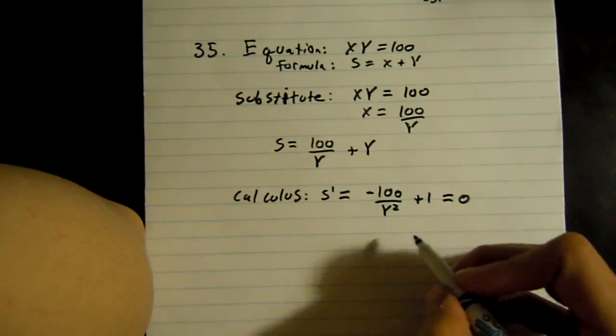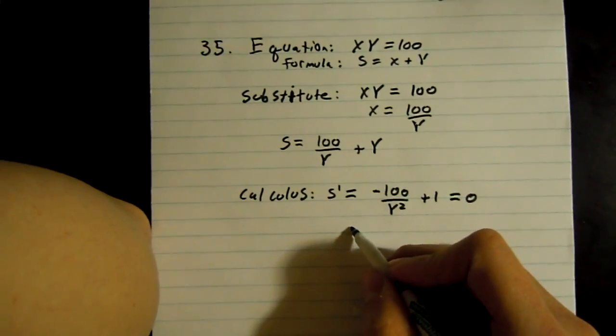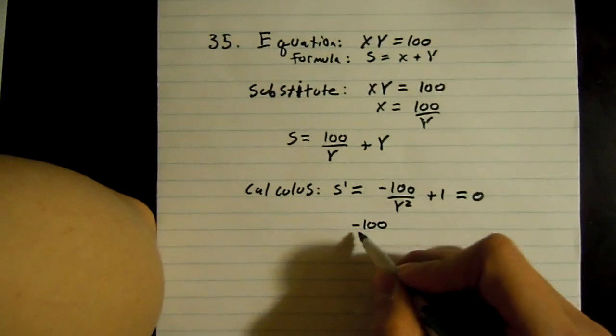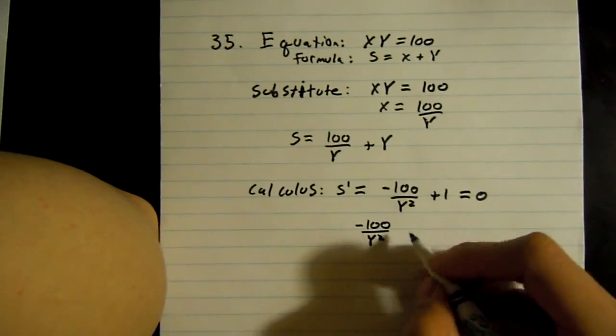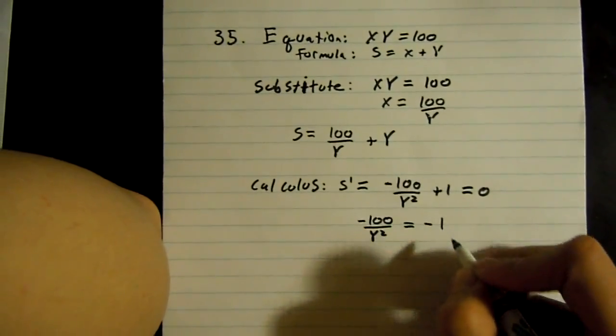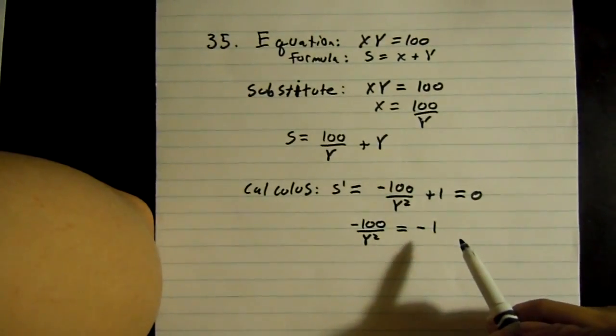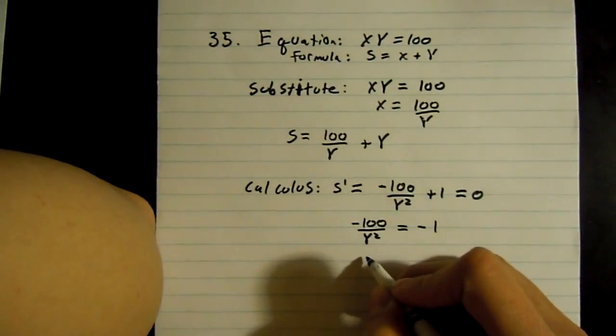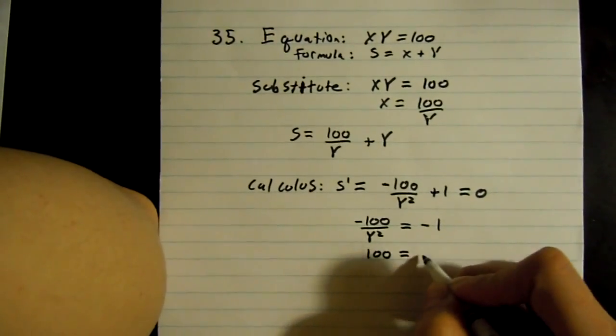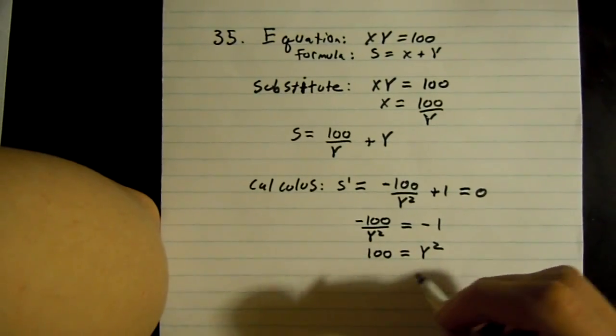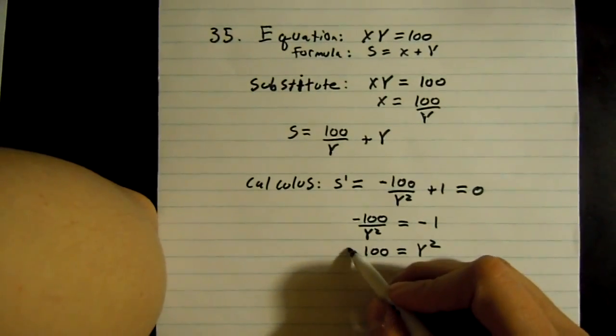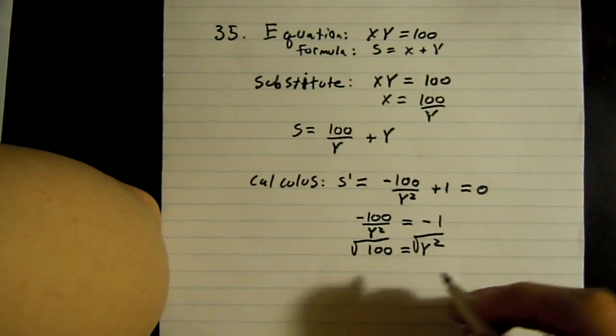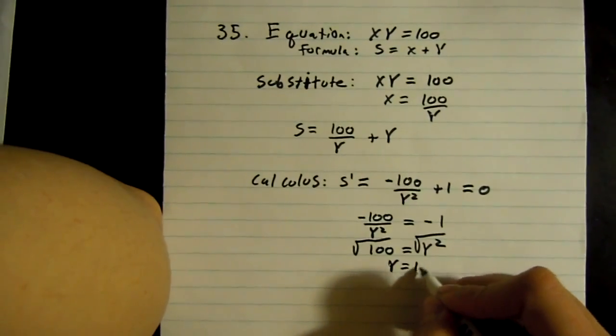And then just solve for y. So we got negative 100 over y squared equals negative 1. Multiply both sides by negative 100, which leaves you with 100 equals y squared. Take the square root of both sides and y equals 10.